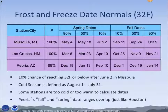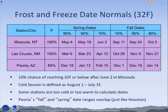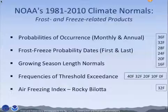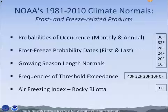For all of this analysis, we've defined the cold season as August 1st through July 31st. Some stations are too cold or too warm to compute dates. For example, Miami, Florida — at 32 degrees it happens maybe 3% of years, so that's not enough data for us to provide dates. Other stations are cold year-round and can be 32 degrees in July or August — Mount Washington in New Hampshire is one of the stations too cold for us to compute. Here is an overview of the frost and freeze-related products: we have probabilities of occurrence at monthly and annual scale, probability dates, growing season-like normals — all for temperatures 16 to 36 degrees. We also have frequencies of threshold exceedance, which was part of our traditional normals release.